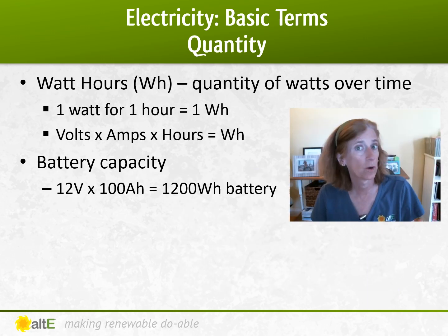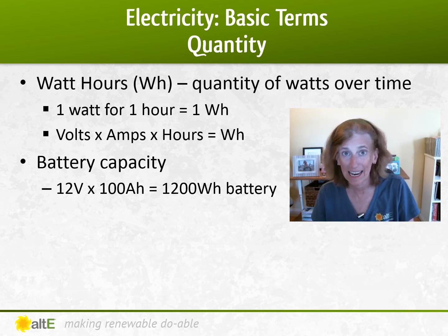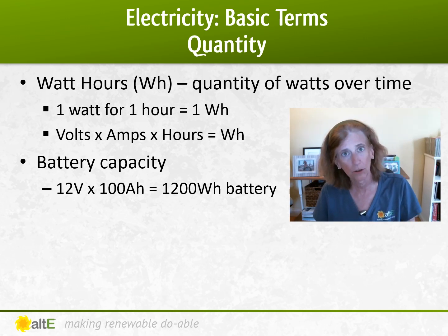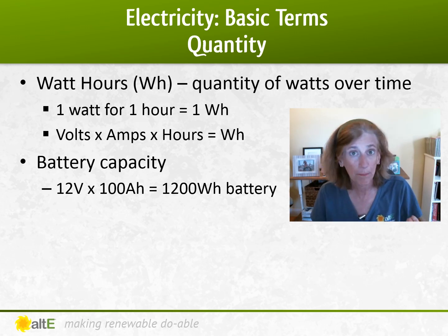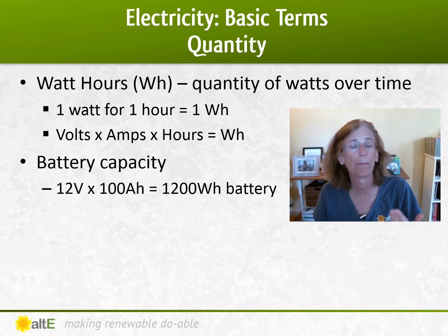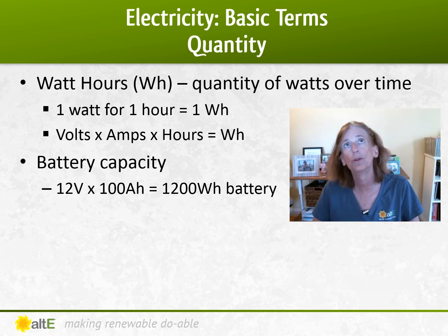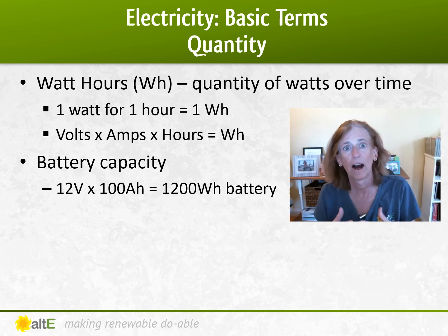Watt hours is the quantity of watts over time. One watt for one hour is one watt hour. Now that takes both volts, amps, and hours into consideration. So if you have a 100 amp hour battery but don't know the volts, you don't know the total capacity. If you multiply by the volts — say 12 volts times 100 amp hours — that tells you it's a 1200 watt hour battery, giving you the whole picture of its energy capacity.